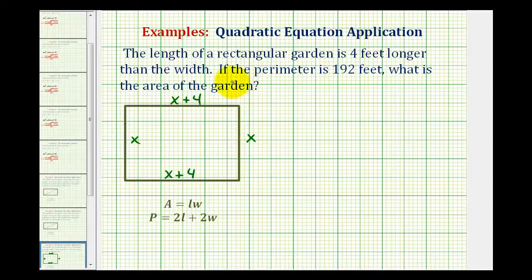So because the perimeter is equal to 192 feet, we can set up an equation involving x. The perimeter is the distance around the rectangle, which would be two times x plus two times x plus four. This would represent the perimeter, which is equal to 192 feet.